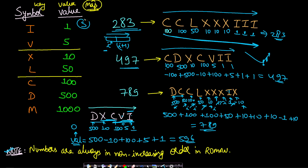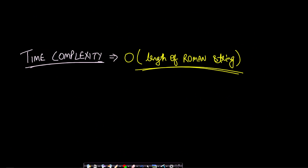To summarize the approach: we are given a string S as the Roman representation and we iterate from left to right. We store the chart in a map where symbols are characters and values are integers. We query two adjacent items at a time and either add or subtract to arrive at the final integer value. The time complexity is O(1) per map query, and we traverse the entire string once, so the overall time complexity is O(length of the Roman string).